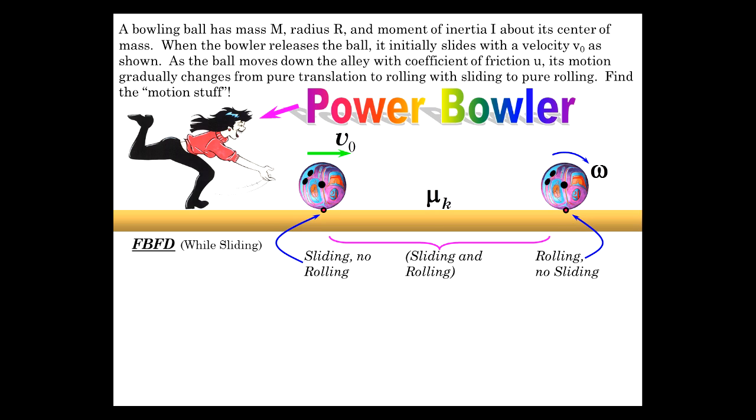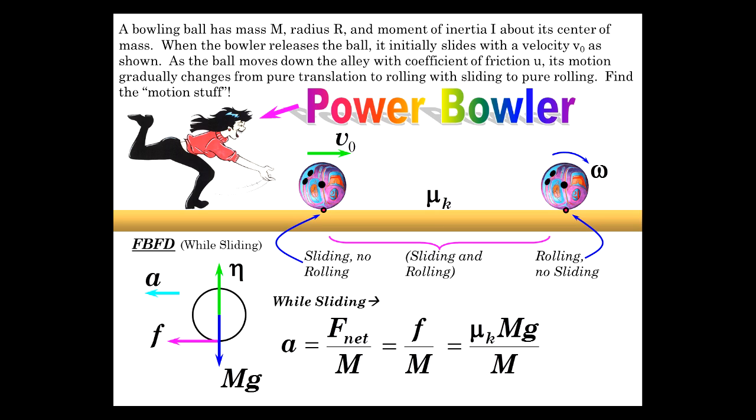So let's do a free body force diagram while the sliding is taking place. So here we have our circle corresponding to the bowling ball. Mg acting straight down, normal acting straight up, cancelling. Because of the normal and the μk, we have friction acting to the left. And thus, there's a net force accelerating the bowling ball to the left. So while sliding, we have A is sum of F over M. Sum of F is friction. So that's μk Mg. The M's go away. And we get the acceleration, μk g.